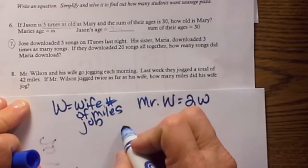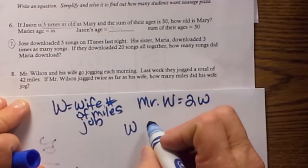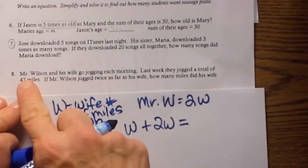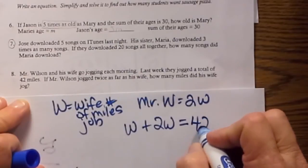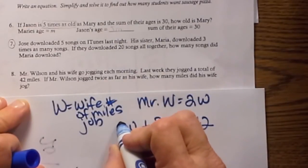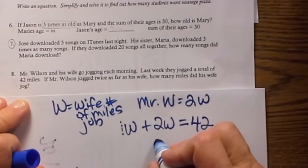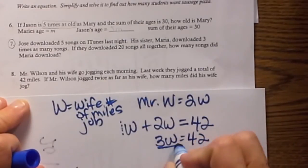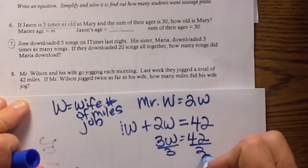So a total means to add. So let's take W plus 2W is equal to the total of 42 miles. So let's add that together. Again we have a 1 here. So 1W plus 2W is 3W is equal to 42. So let's divide by 3.